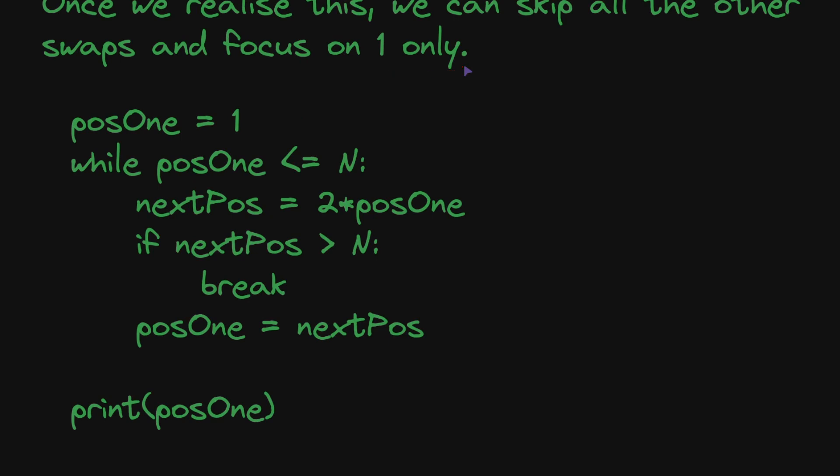Our algorithm becomes: position of 1 is 1, while the position of 1 is less than or equal to n, the next position would be the current position multiplied by 2. This is the smallest number which has largest proper divisor as pos1. Because this is the second number which gets divided by pos1, and the first one is pos1 itself which we cannot take as a divisor. If the next position becomes greater than n we break. Otherwise we assign pos1 as the next position. At last we print the value of variable pos1.